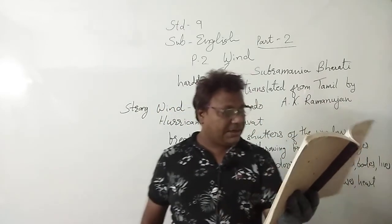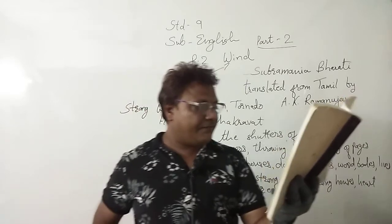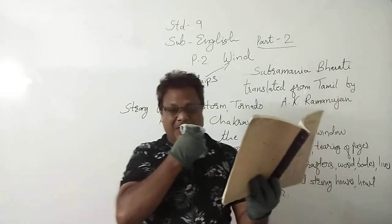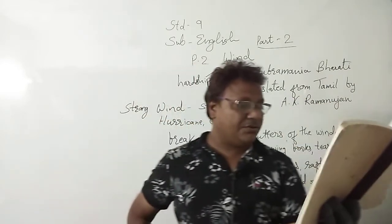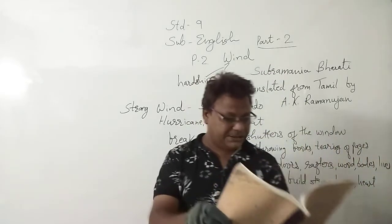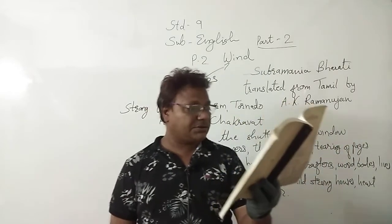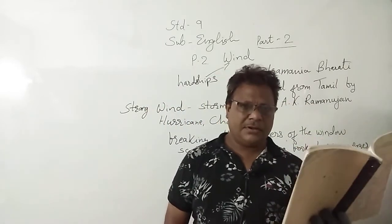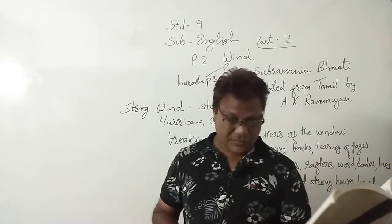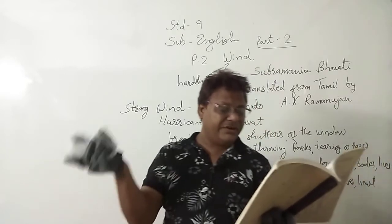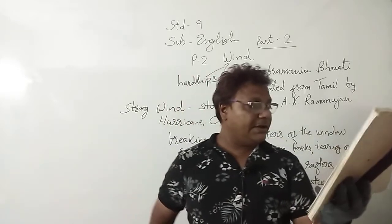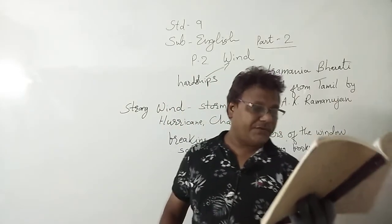Now we come to the next line: 'Do this and the wind will be friends with us.' Here the W sound is repeated through the words 'wind,' 'will,' and 'with,' so the figure of speech is alliteration. It is also climax — two actions are talked about: first you do this, then the wind will be friends with us, so actions are arranged in sequence. And it is addressed to all the people, so it is apostrophe as well.